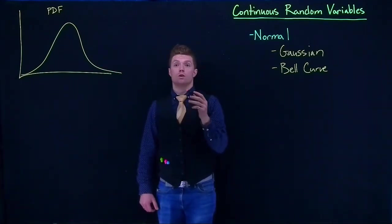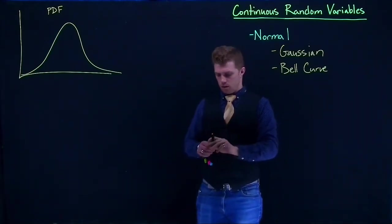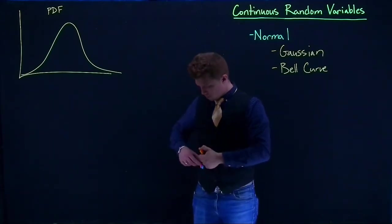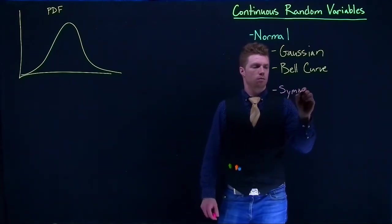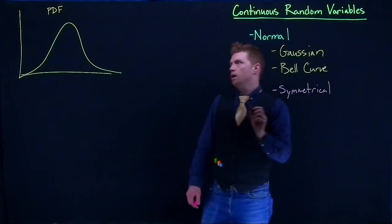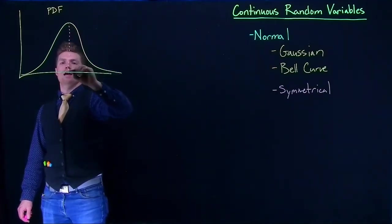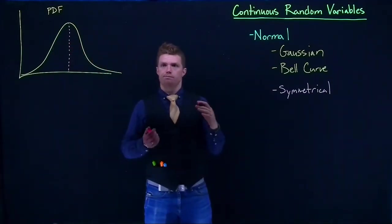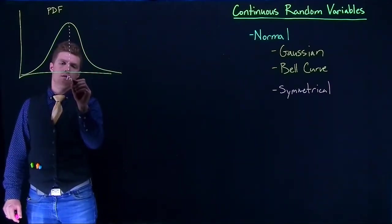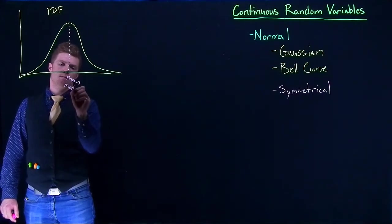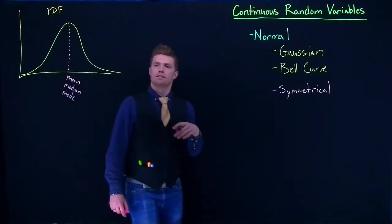So this is what is known as our normal distribution. Now there's some cool things about it. The normal distribution is symmetrical. That means that if we fold it about the center line, it's identical. It would match up perfectly. And because of that, that means that the mean, the median, and the mode all reside at this center spot.